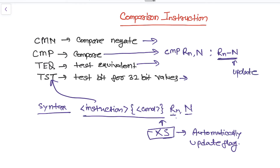However, there will not be any assignment — it will just subtract N from Rn, and according to the result it will update the flag register, that is the SPSR and CPSR. The comparison instruction does not write back to any registers or memory locations. It only compares these two registers or numbers together and updates the flag registers.